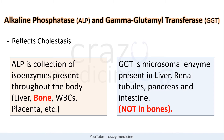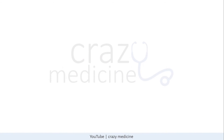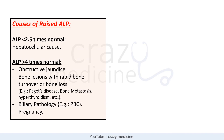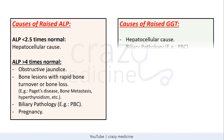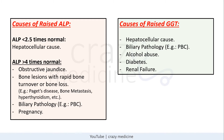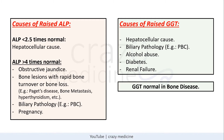This is a specific point to remember. Causes of raised ALP include hepatocellular causes, obstructive jaundice, bone lesions with rapid bone loss (e.g., Paget's disease), hyperthyroidism, biliary pathology like primary biliary cirrhosis, and pregnancy. Causes of raised GGT include hepatocellular causes, biliary pathology, alcohol abuse (a specific cause), diabetes, and renal failure. Remember: GGT is normal in bone disease because it is not expressed in bone.